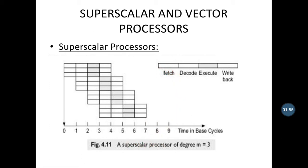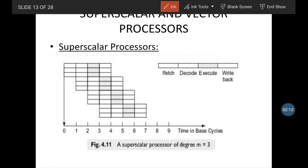In this diagram, a superscalar processor of degree m equals three is shown. At clock cycle zero, we have the first, second, and third instructions being issued simultaneously — three instructions at a time. At clock cycle one, the fourth instruction starts, and again three instructions are issued at once. This is why it is called superscalar.